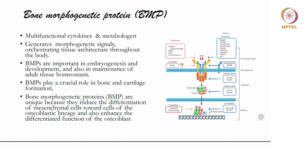Bone morphogenetic protein is a multifunctional cytokine, also called a morphogen, because it generates many morphogenetic signals as the name suggests. It orchestrates tissue architecture, executing the morphological aspects important in embryogenesis and development, and plays a crucial role in bone and cartilage formation. Importantly, BMPs trigger the differentiation of mesenchymal cells towards cells of the osteoblastic lineage.